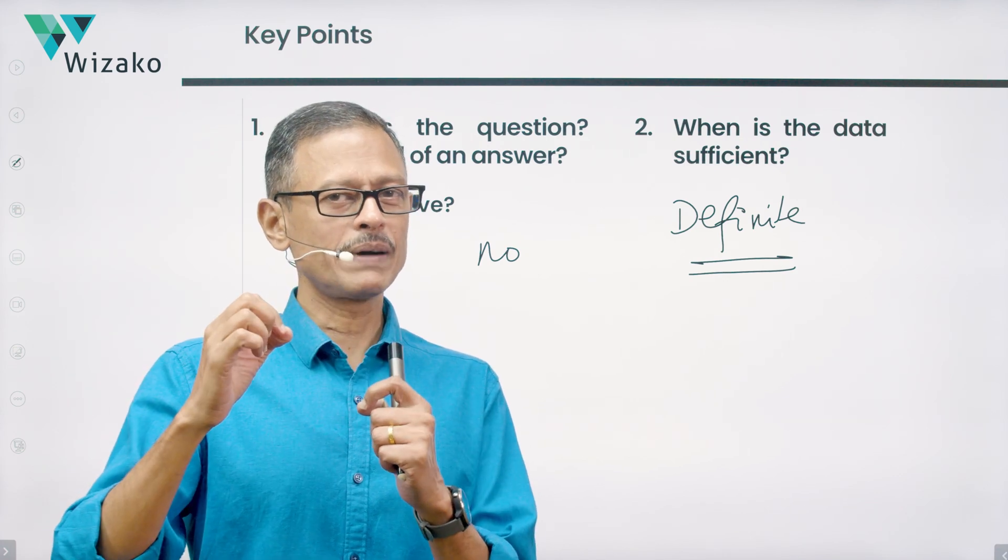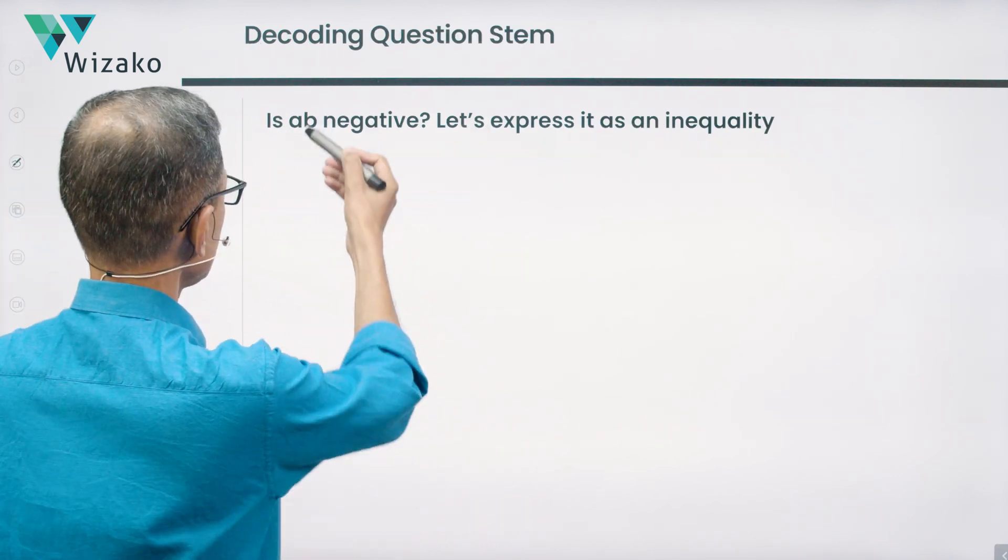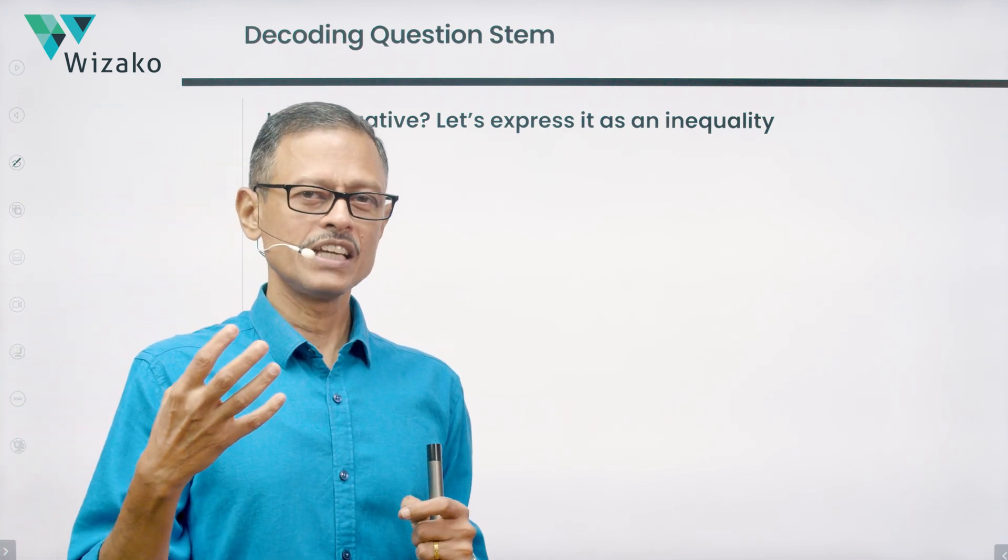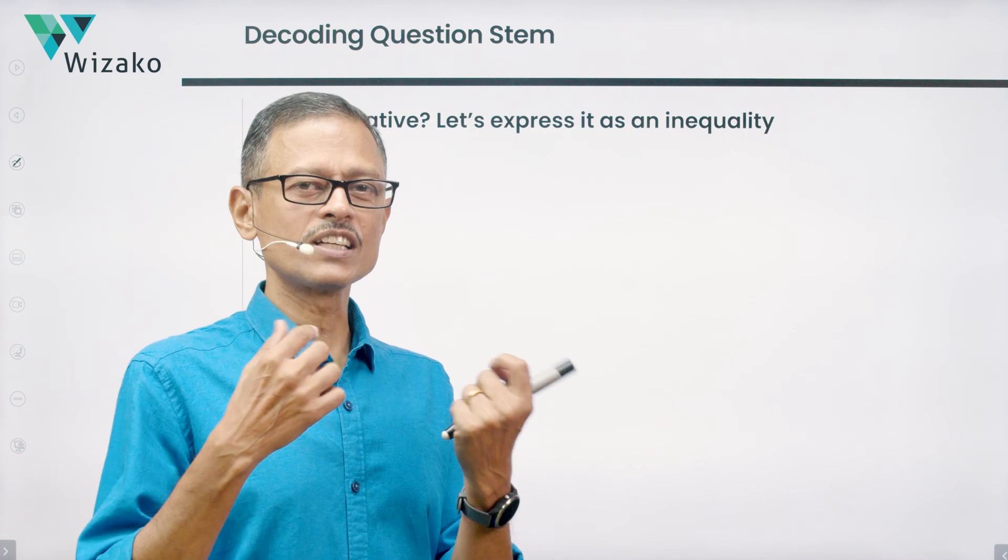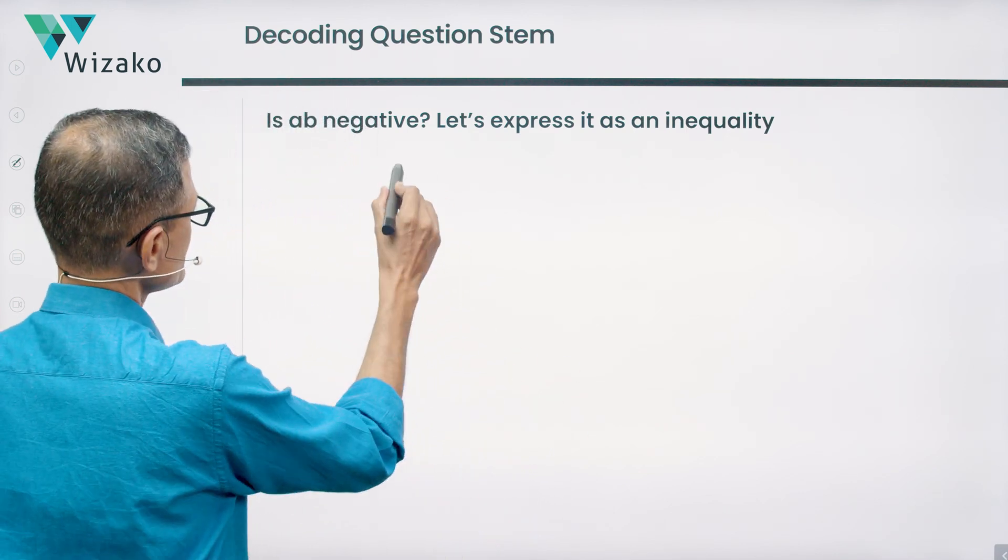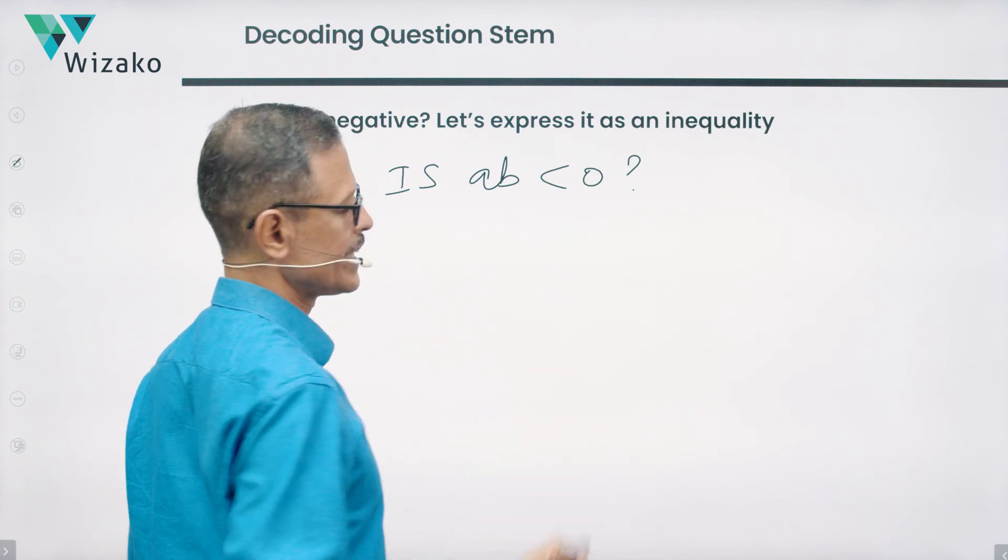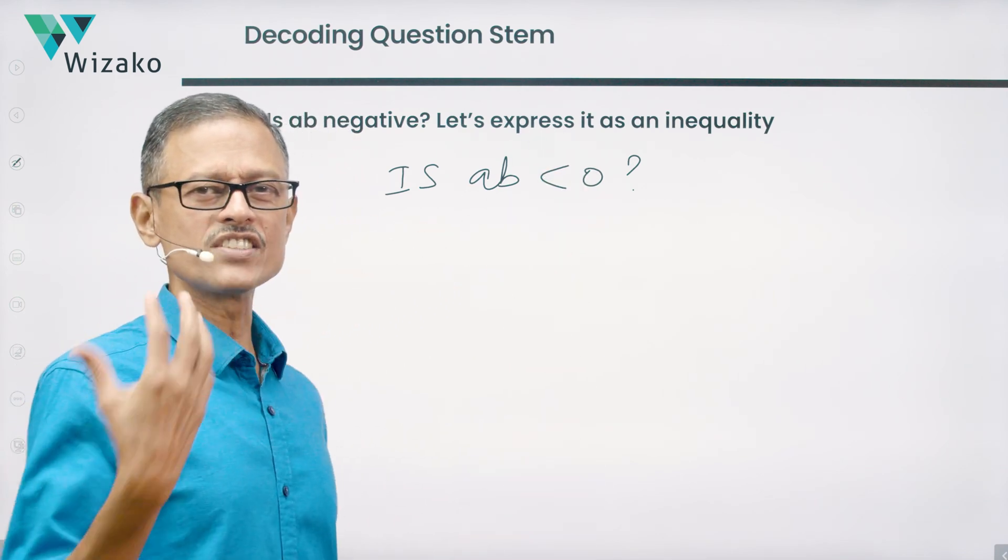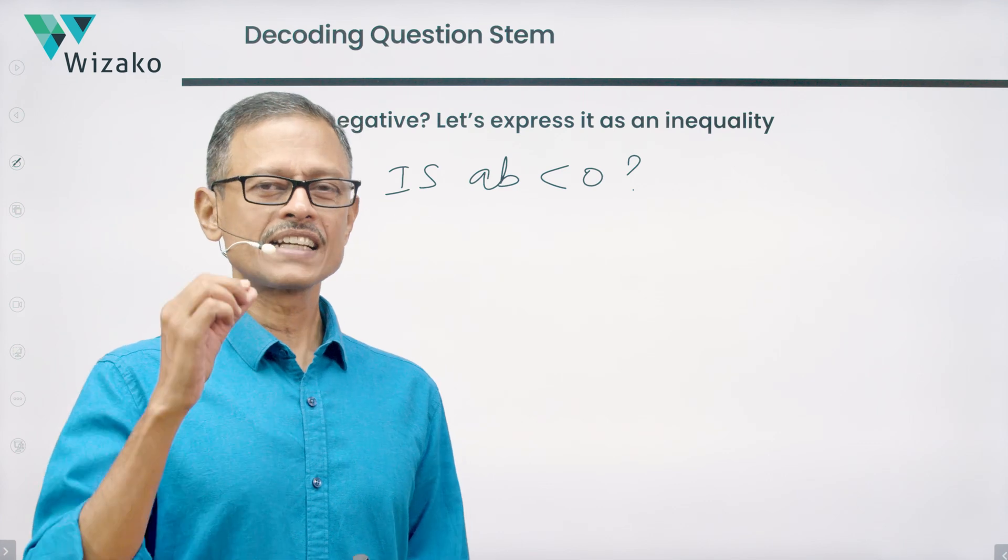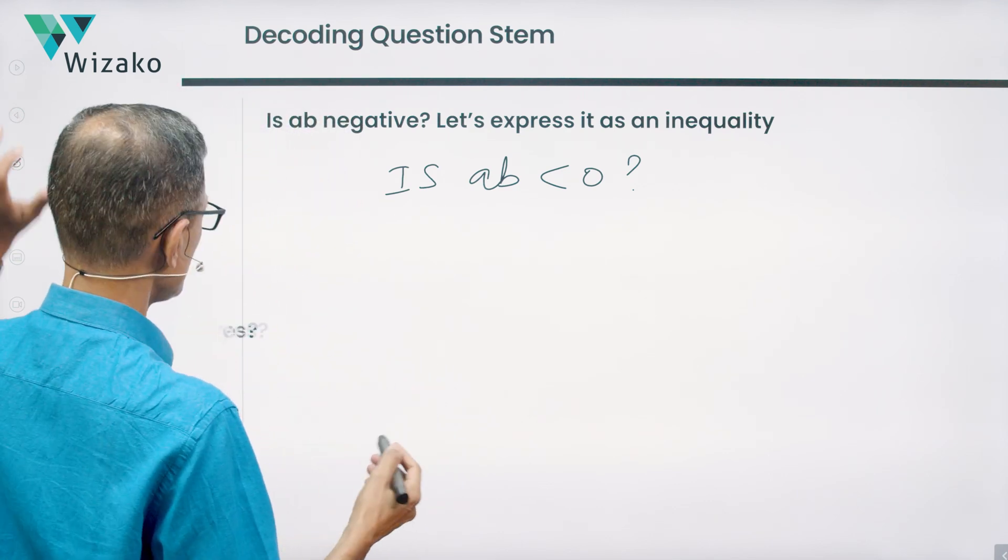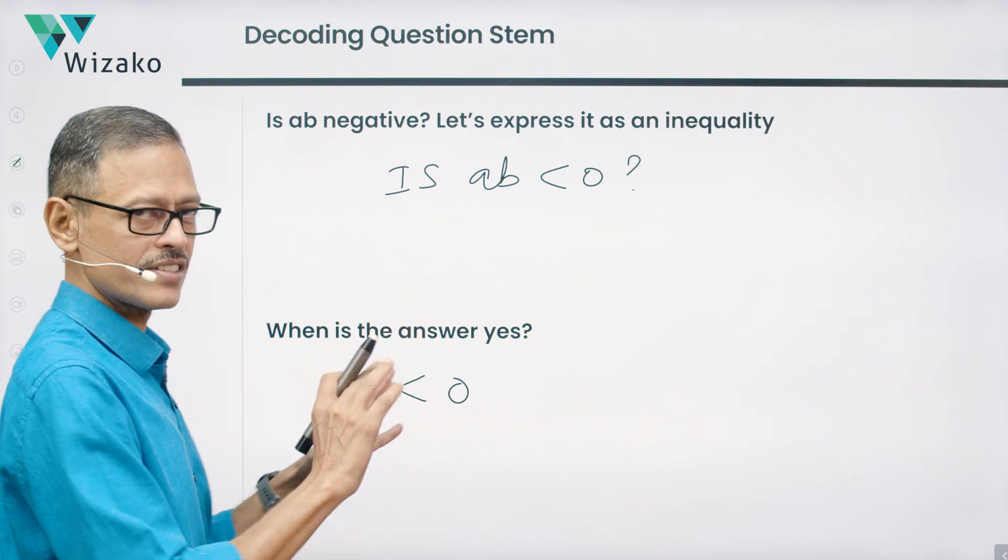On that note, let's quickly start by decoding the question stem. What does AB negative? Is AB negative? How can we write the same thing if we express it as an inequality? Sometimes writing it as an inequality helps us understand the nuances a lot better. We'll write it as, yes, AB less than 0 is the inequality. We know that any is question fetches an answer which is a yes or a no. So, let's understand when is it a yes. The yes is very obvious. If AB is less than 0, then the answer is yes.